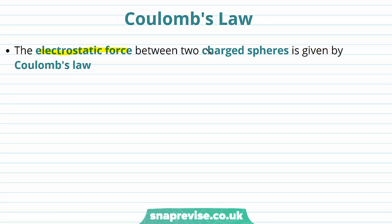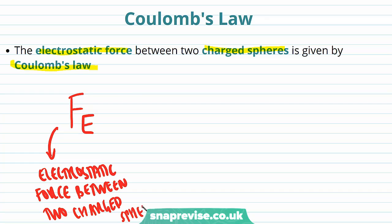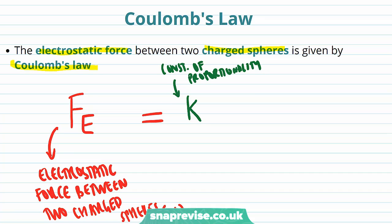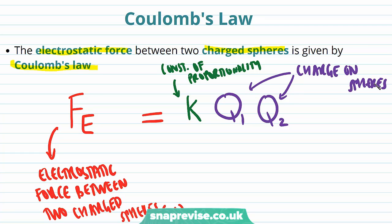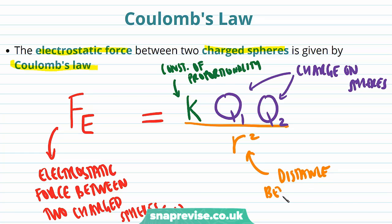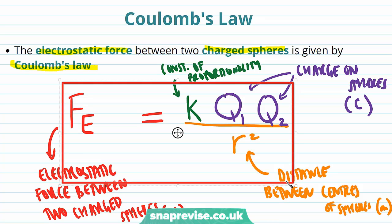The electrostatic force between two charged spheres is given by Coulomb's law. Coulomb's law states that the electrostatic force between two spheres, Fe, which is measured in newtons, is equal to some constant of proportionality K, times the charge of both spheres — Q1 on the first sphere and Q2 on the second sphere — divided by R squared, which is the distance between the centres of the spheres. And this is Coulomb's law.